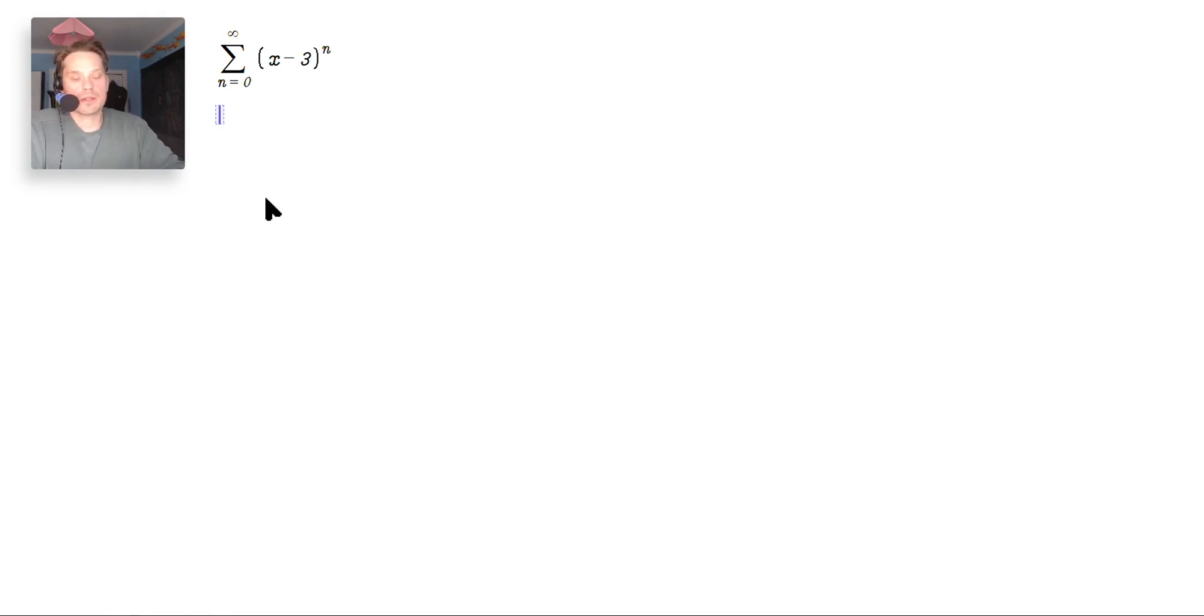So first note, we're going to apply the ratio test to the limit as N goes to positive infinity. And you should do this in absolute value this way. Then you will do X minus three to the N plus one. So notice I'm replacing N with N plus one. Then you divide by X minus three raised to the N and you work through this.